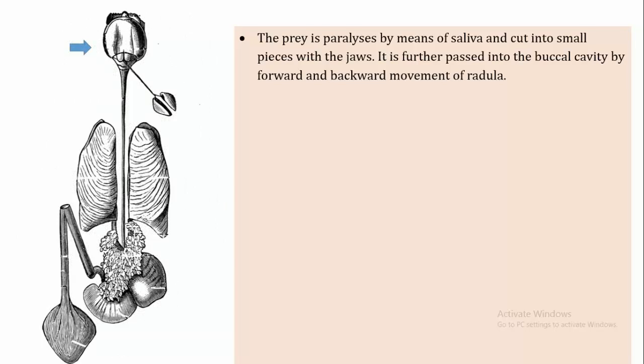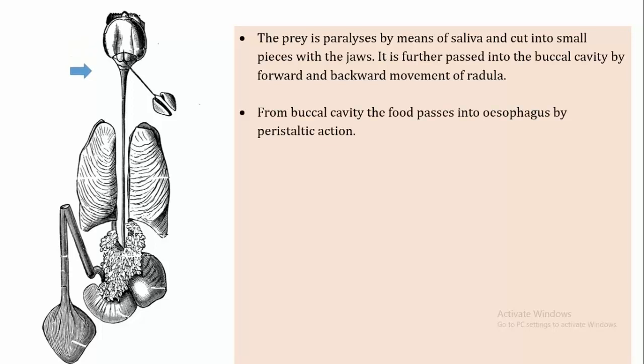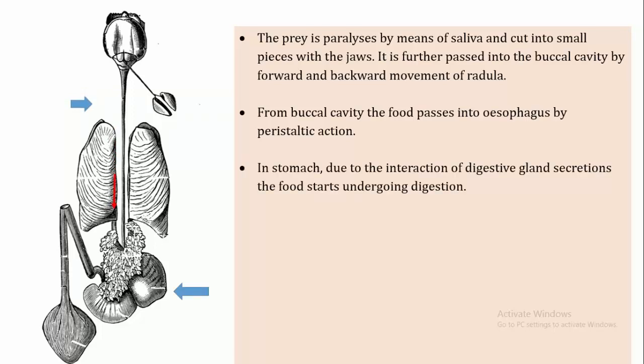The prey is paralyzed by means of saliva and cut into small pieces with jaws. It is further passed into the buccal cavity by the forward and backward movement of the radula. From the buccal cavity, the food passes into the oesophagus by peristaltic action.